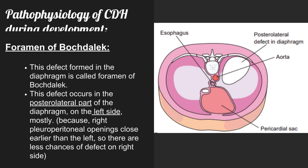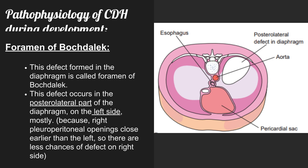As shown in the figure, this defect formed in the diaphragm is called the foramen of Bochdalek. This defect occurs in the posterolateral part of the diaphragm, mostly on the left side, because the right pleuroperitoneal openings close earlier than the left, so there are fewer chances of defects on the right side.